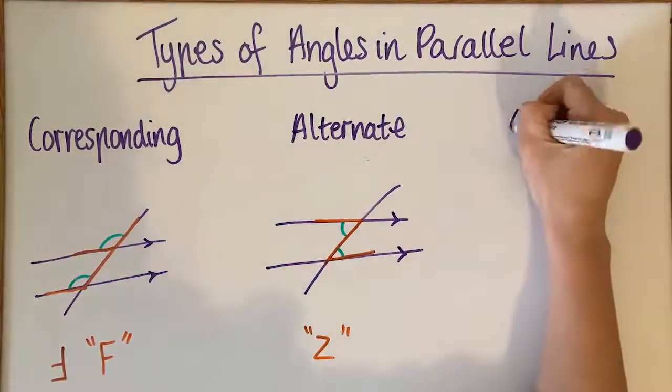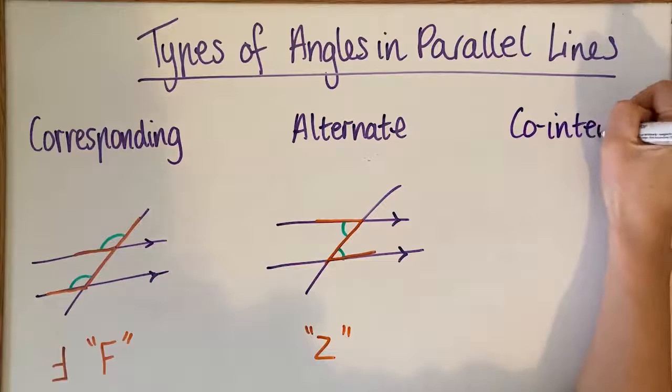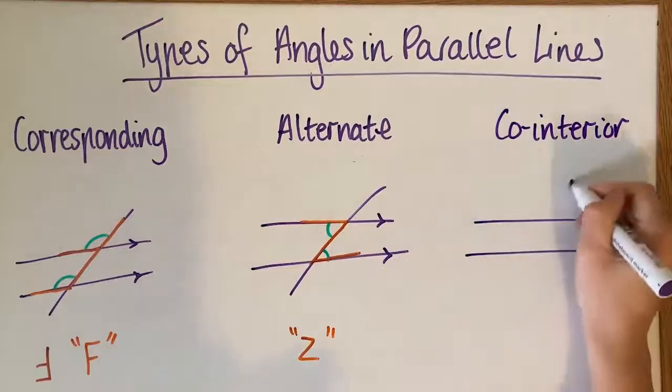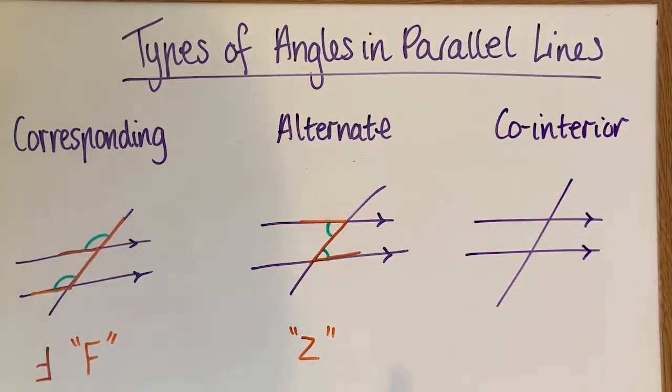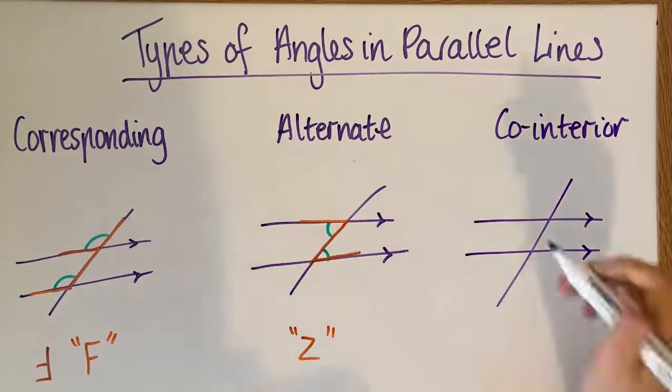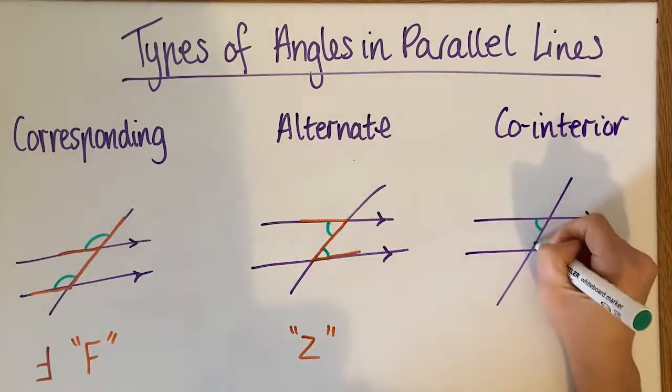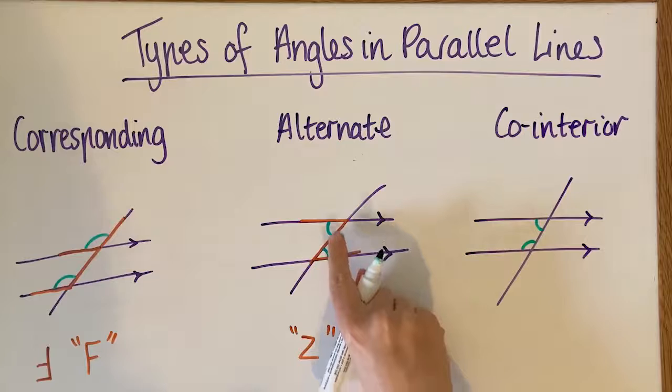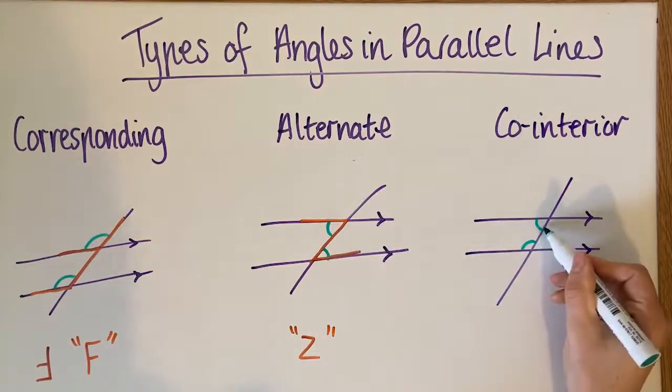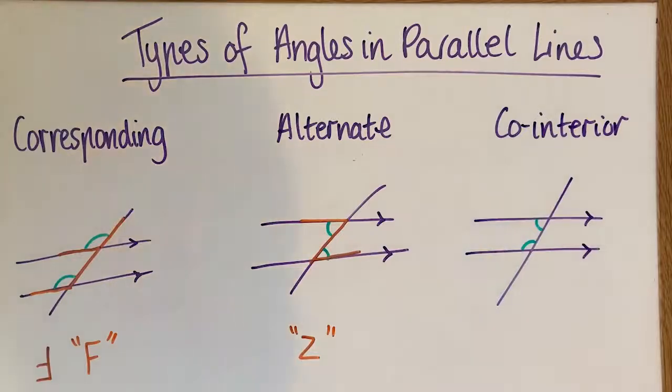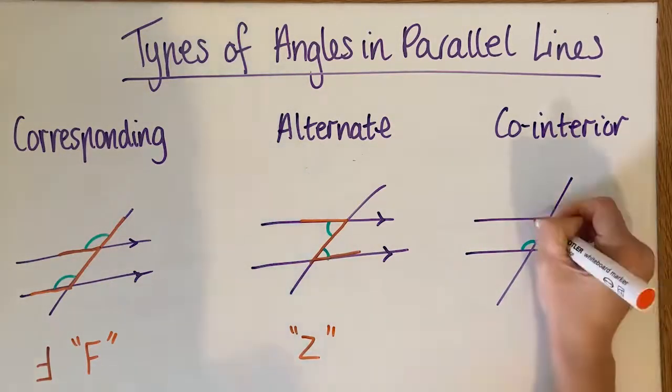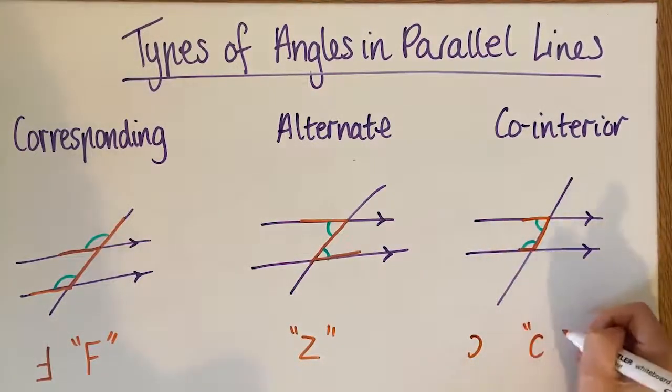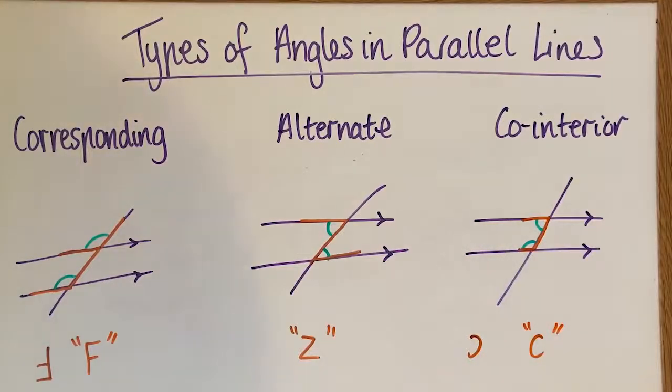The last type is called co-interior. So as the name kind of suggests, they're on the inside. These would be our co-interior angles, so they're both on the inside but on the same side. Unlike alternate angles that are on the inside but on opposite sides, these are on the inside but on the same side. These are sometimes called C. I've done it on the opposite side, but if it had been on the other side, it's kind of like a C symbol. So there are three different types.